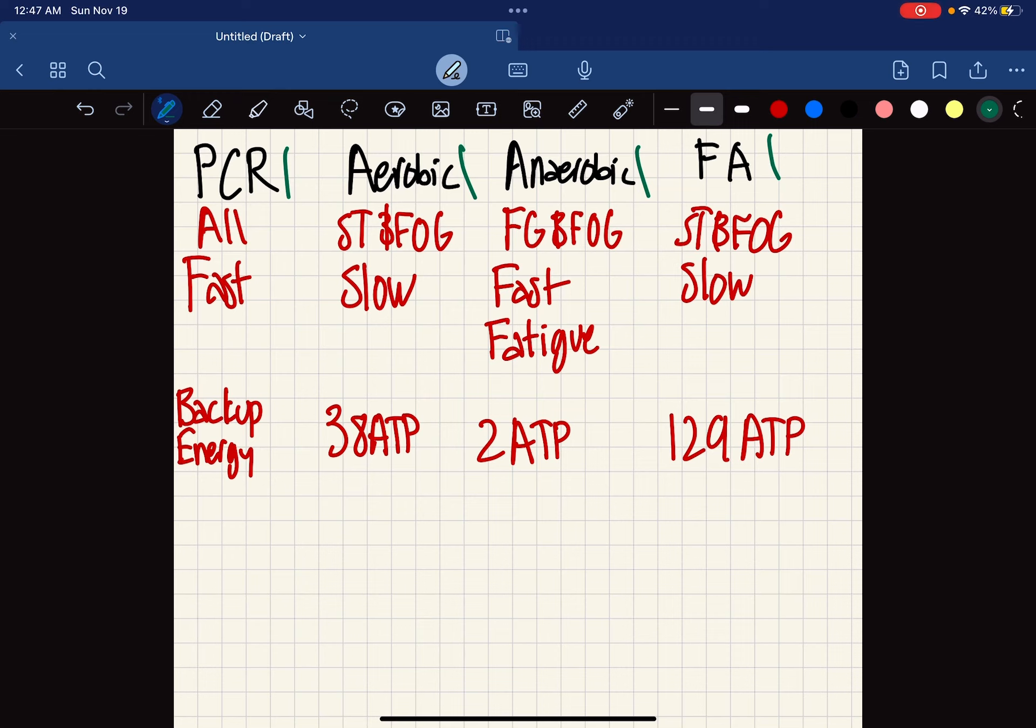It's backup energy, you need it in a snap. The aerobic glycolysis is a slow process. Anaerobic is fast, you need it in a snap. Fatty acid is also a slow process. With specifically the anaerobic, you get fatigue and also lactic acid.